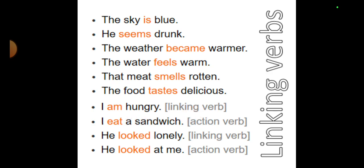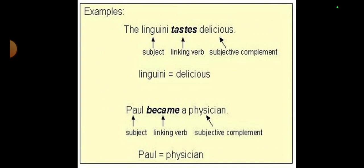'He looked lonely' and 'He looked at me' — what is the difference between these two? In 'he looked lonely,' 'lonely' is a complement and no action is going on, so we declare 'looked' as a linking verb. But in 'he looked at me,' action is going on, so it is an action verb, not a linking verb. Remember two things always: linking verbs do not contain any action in themselves, and they link the subject to the complement within a sentence. 'The linguine tastes delicious' — subject linked with complement, no action, so it is a linking verb.